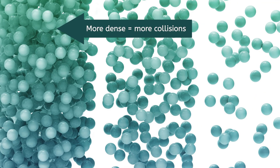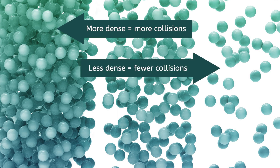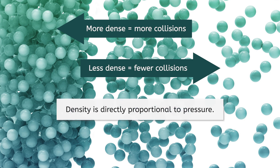When fluids are more dense, the molecules are far more likely to bump into each other than when they are less dense and spread out. Because of this, the density of fluids is directly proportional to another property that we can measure: pressure.